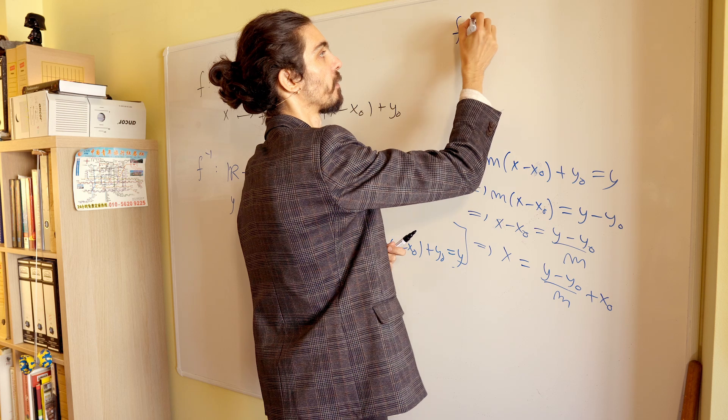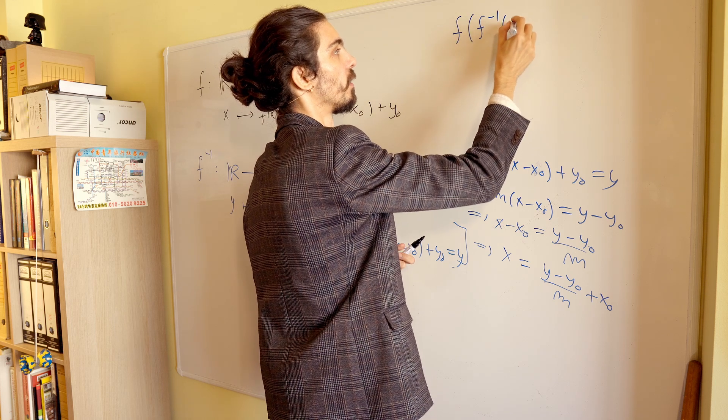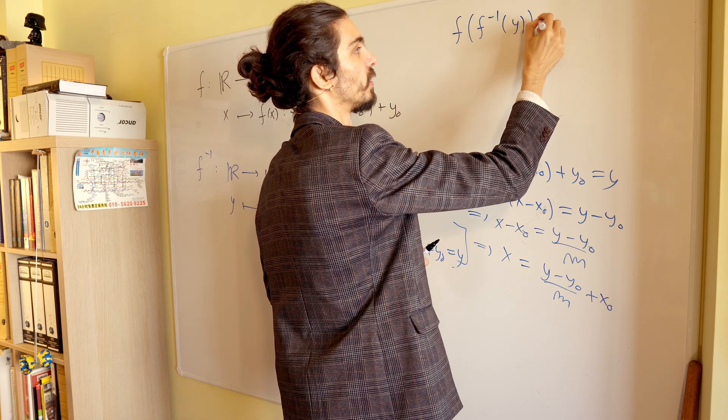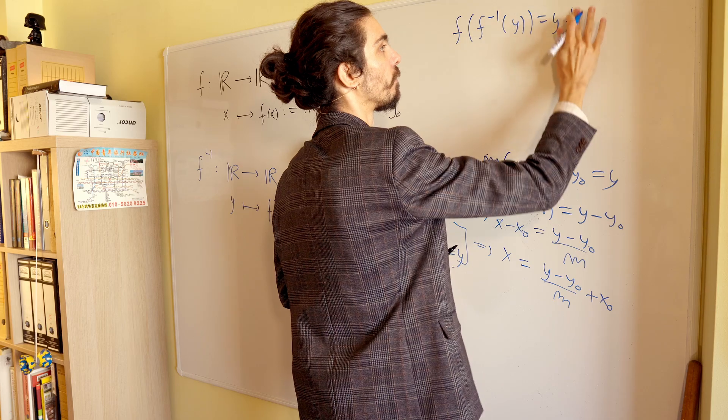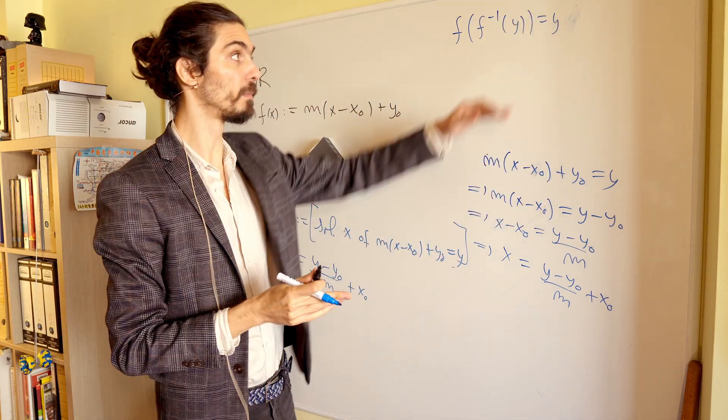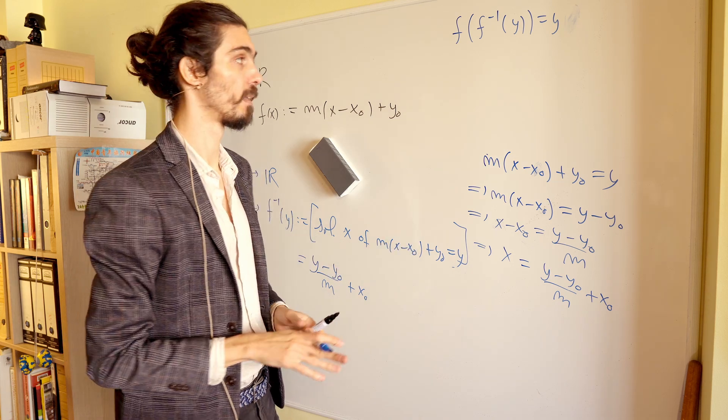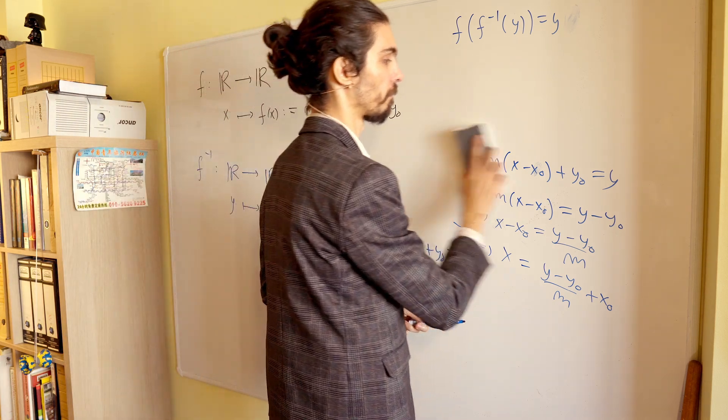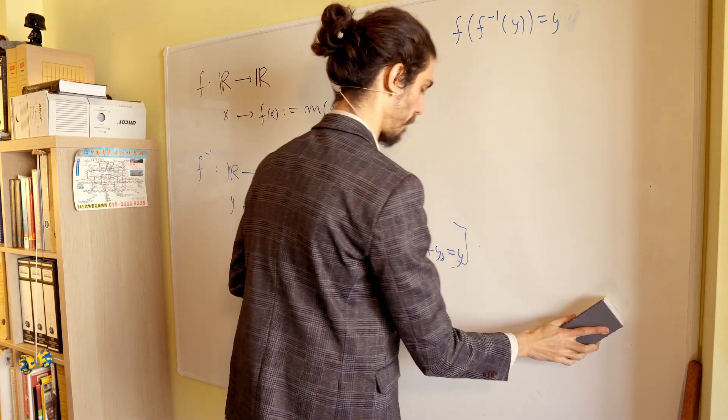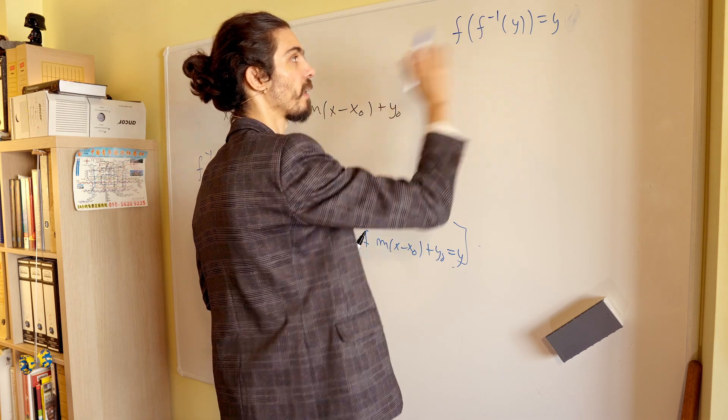Let's choose just one of them. It could be just f of f minus 1 of y is equal to y for all y. Okay? This must be true for all y. But is it true for this case? Let's see.